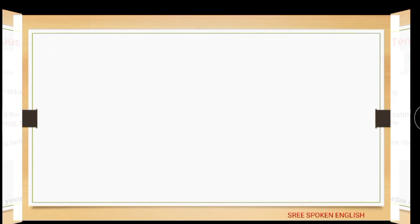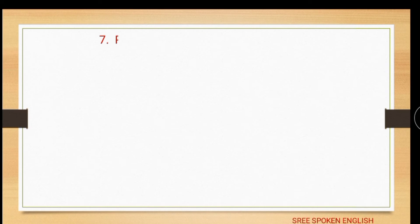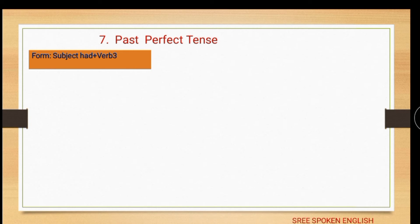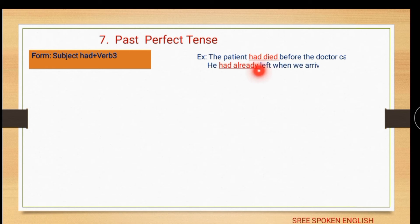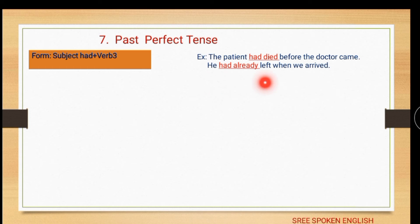The third subcategory: past perfect tense. The form is: subject + had + verb third form. Example: 'The patient had died before the doctor came' — had + verb 3. Another example: 'He had already left when we arrived.'